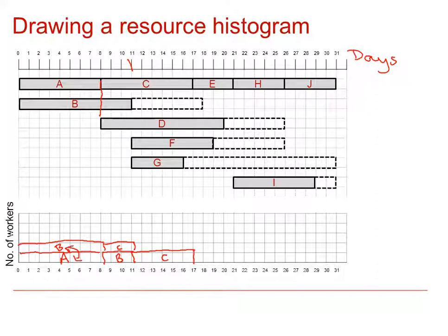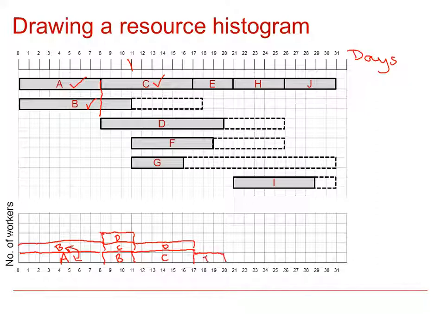It doesn't matter where you draw your activities; what matters is the overall shape of the histogram. I could have drawn B at the top and C underneath if I'd drawn C first. So we've done A, B, and C. D also starts on day 8 and goes on to day 20, so I'm going to draw D next. I've got to stop at 11, then go down to the row below, D continues at 17, then go down to the row below again going to 20.